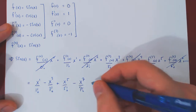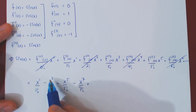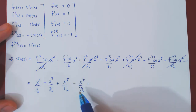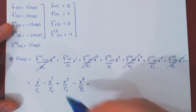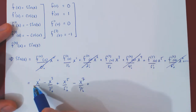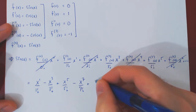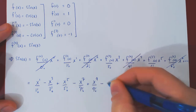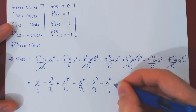A pattern is visible: the powers are all odd — 1, 3, 5, 7 — and whatever the power, we divide by that same power's factorial. There is also an alternation in sign: positive, negative, positive, negative. So we can predict the next terms: positive x to the 9 over 9 factorial, then negative x to the 11 over 11 factorial, and so forth.